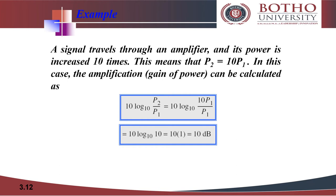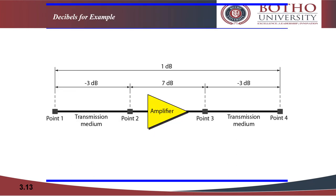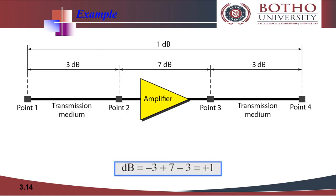One reason that engineers use the decibel to measure the changes in the strength of a signal is because decimal numbers can be added or subtracted when we are measuring several points instead of just two. In the figure shown, a signal travels from point one to point four. In this case, the decibel value can actually be cascaded and calculated. The decibel value is calculated as minus 3 plus 7 minus 3 equals plus 1.